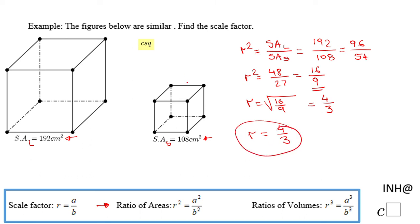In other words, if you have any side of this small rectangular prism, like this one, you can multiply by four thirds and get the corresponding side on the large rectangular prism.